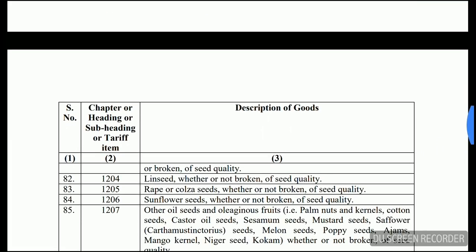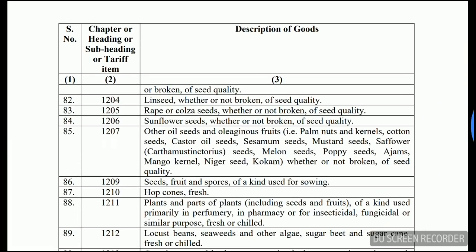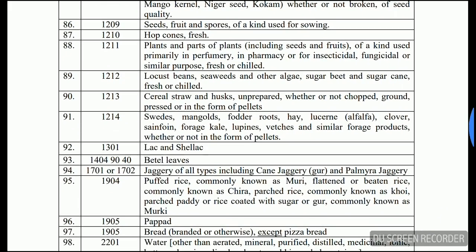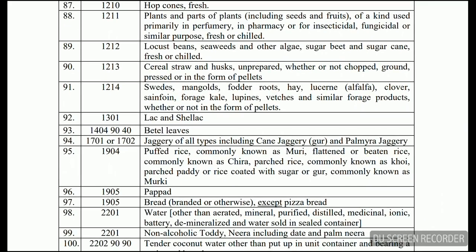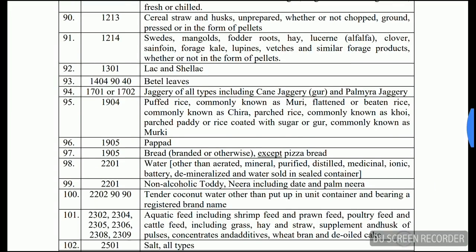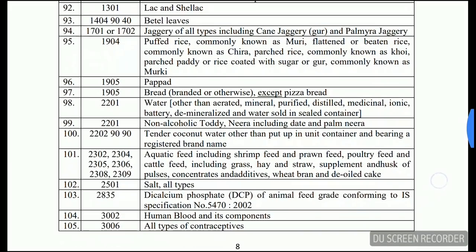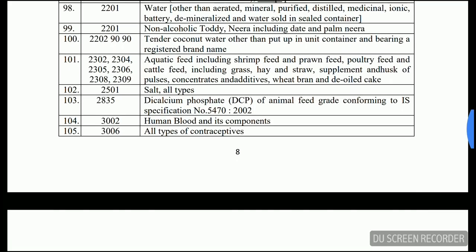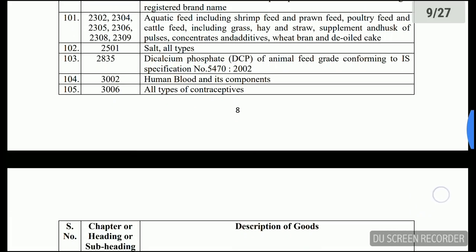Soya beans, groundnuts, linseed, sunflower seeds, and other oil seeds are included. Also fruit and spores, hop cones, plants and parts of plants, husks and shells, betel leaves, pepper, bread, water, non-alcoholic toddy, tender coconut water, and salt are all exempt from e-way bill requirements.